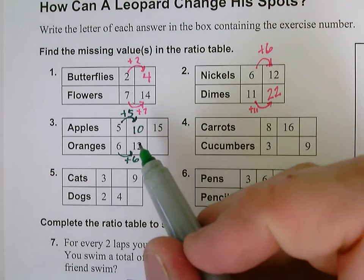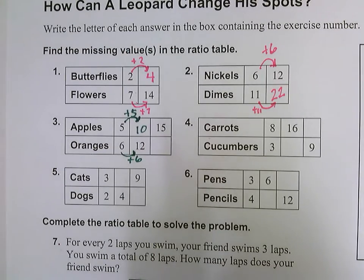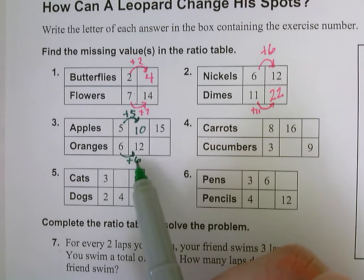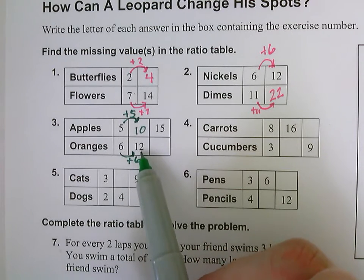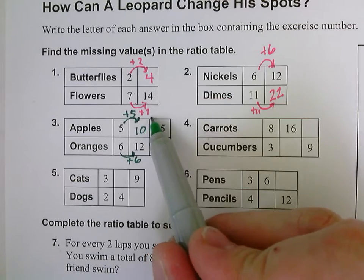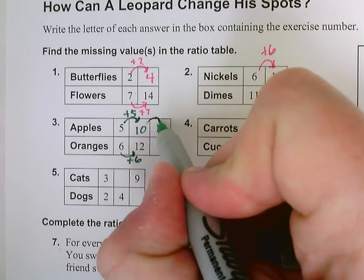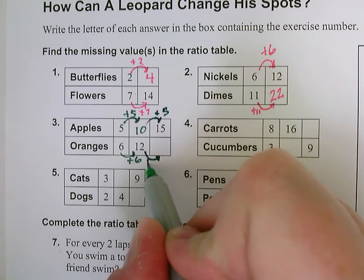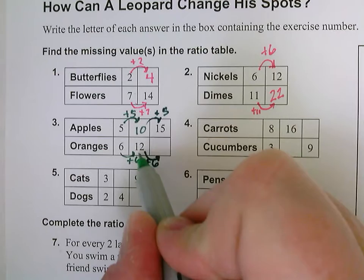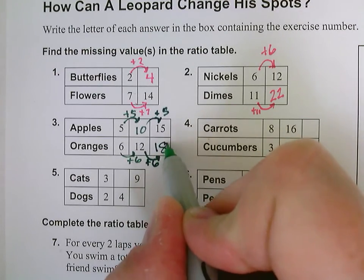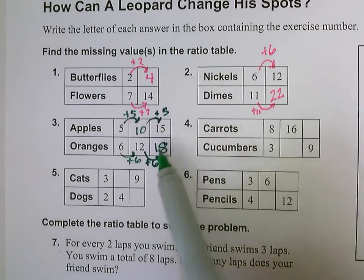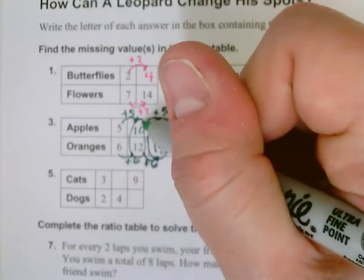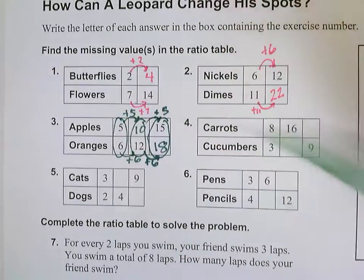Now I have an extra group of five to add to 10 and an extra group of six to add to 12. It looks like I can add another group of five to get from 10 to 15, and I'm going to add another group of six down here. So I have 15 apples to every 18 oranges. This is my ratio of 15 to 18. Ten to 12 is the ratio of apples to oranges.